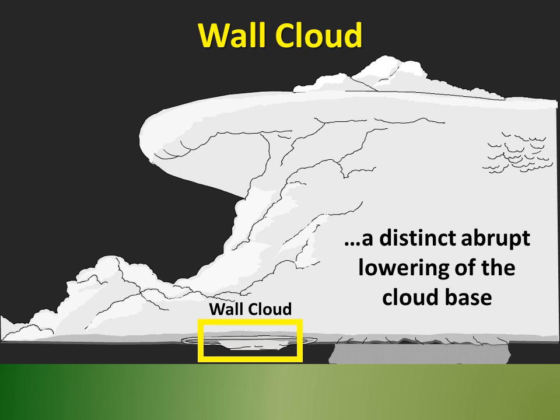One of the main visual clues spotters should look for is the wall cloud. The wall cloud is an isolated lowering of the cloud base. As you can see in this side view of a supercell, the wall cloud forms beneath the main updraft and adjacent to the rainy downdraft.